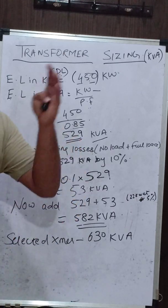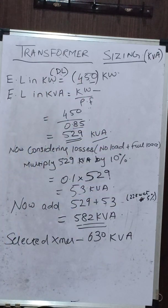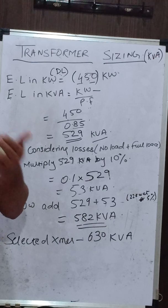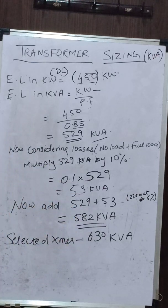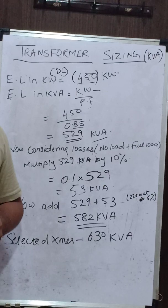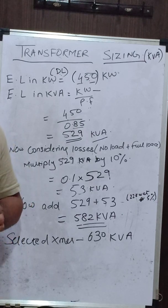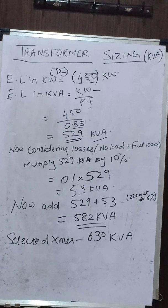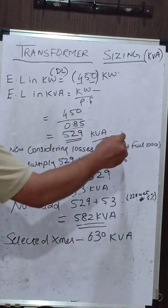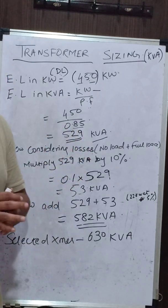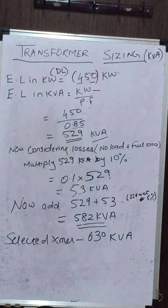Now, if you want to select a transformer, you cannot select one of exactly 529 kVA. This is because there are many losses taking place inside the transformer. These losses include no-load losses — hysteresis and eddy current losses — and full-load losses, which are copper losses. Because of these losses, if you supply 529 kVA at the transformer input, the output may only be around 500 kVA, meaning 29 kVA is wasted as losses. That is why you cannot size the transformer exactly based on the electrical load.